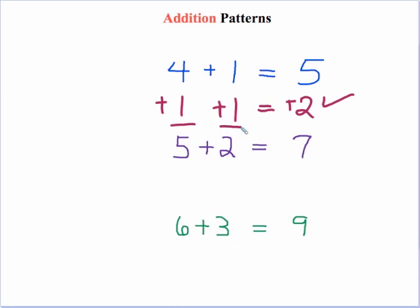The process repeats for the next pairings, where to get from 5 to 6 we add 1, and to get from 2 to 3 we add 1, resulting in a net change of 2.